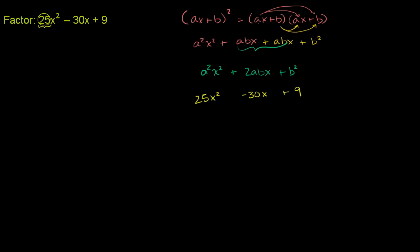So if this is a perfect square, then that means that the a squared part right over here is 25, and that means that the b squared part is 9.